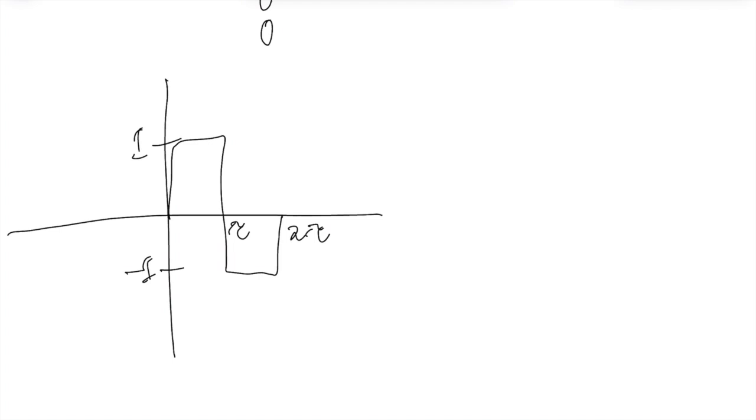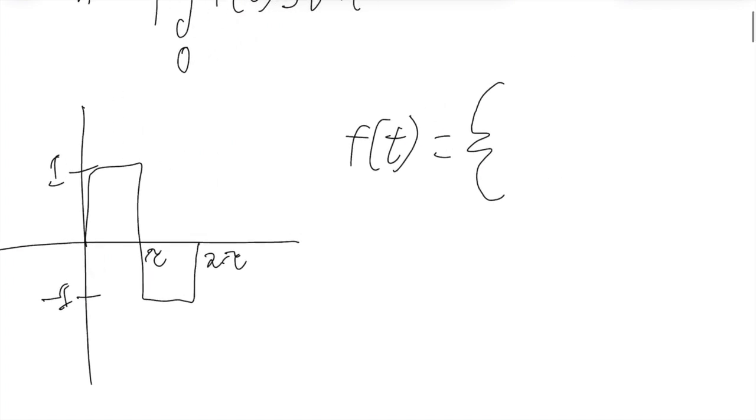So since we'll be integrating this function we have to define it and the best way to do that is to make it a kind of piecewise. And the only place we have to worry about is the segment here that we'll be integrating over. So we only have to define it for that segment. So on that segment it'll be one if t is between zero and π, and it'll be negative one if t is between π and 2π.